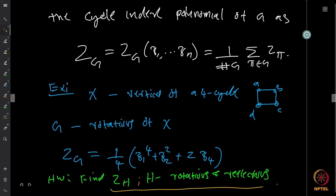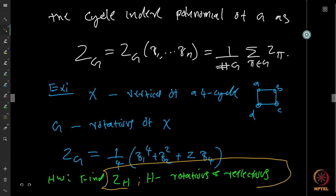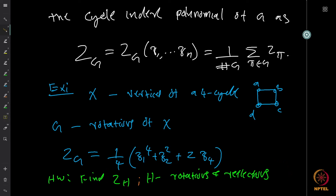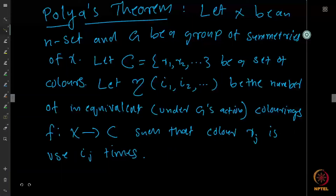As homework, find Z_G for the case where H includes both rotations and reflections of the 4-cycle. Instead of just rotations, if we also allow reflections (mirror images), find the cycle index polynomial Z_G for that group.